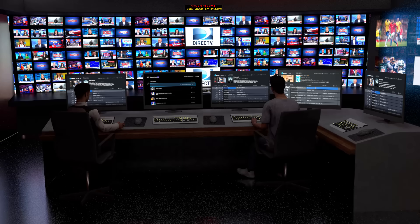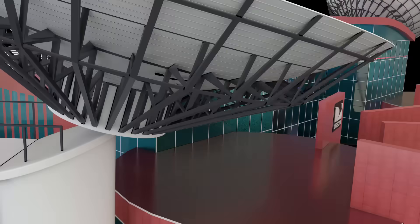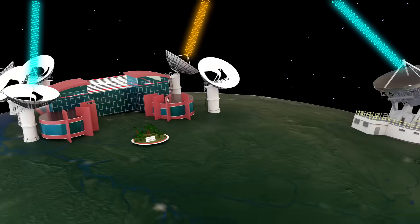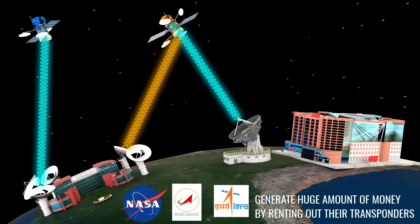After that, the DBS provider beams the signal to their rented transponder in a satellite. A DBS provider rents many transponders to handle the huge amount of data they have to transmit. This way, around 300 to 400 channels will be available on a single DBS provider satellite.